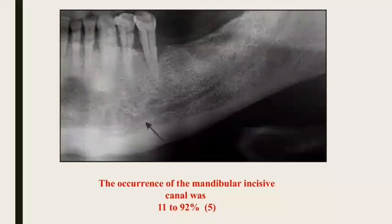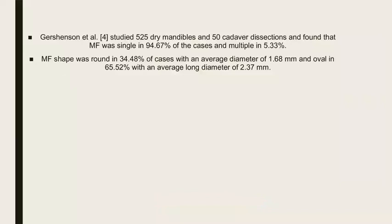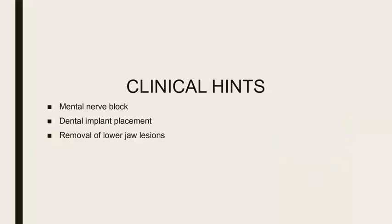The anterior loop of the mental canal is defined as the mental neurovascular bundle which crosses inferiorly and anteriorly to the mental foramen before looping back to exit through it. The length of this loop can range from 0 to 10 millimeters.